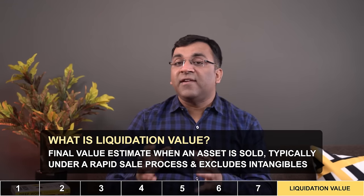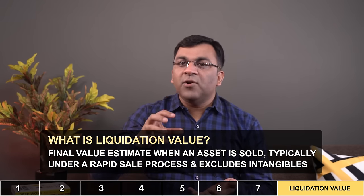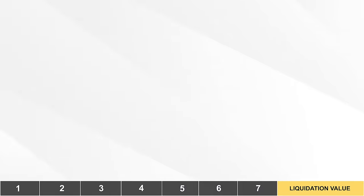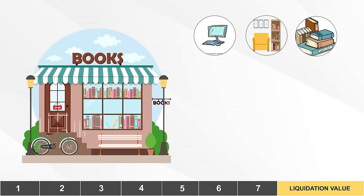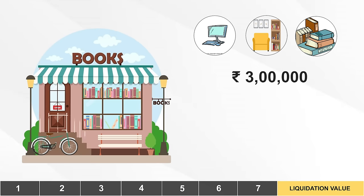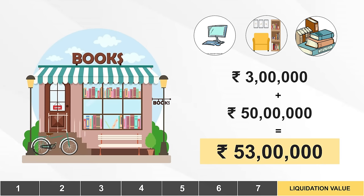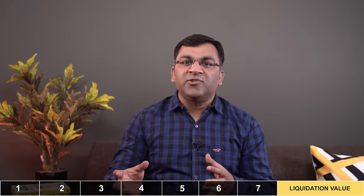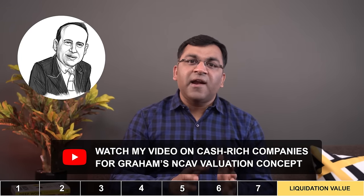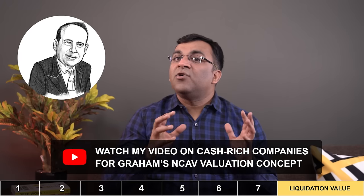The liquidation value is our eighth technique. A company's liquidation value is the total worth of its physical assets if it were to go out of business. For example, our bookshop has assets like a computer, books, tables, chairs, fittings, etc. The owner bought these for about 10 lakhs, but obviously no one is going to pay that much, so it'll be like a fire sale — let's say this fetches about 3 lakh rupees. The liquidation value for our bookshop will be 50 lakhs (the value of the property) plus an additional 3 lakhs received when we put this business on the block. This concept is generally used in bankruptcy situations like what we're seeing with Reliance Capital and the Sree Group. But there was a time in the 1930s and 40s when Benjamin Graham advocated this very approach to find extremely cheap companies.